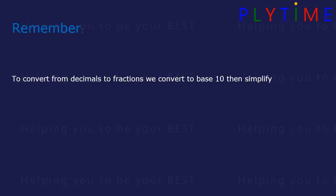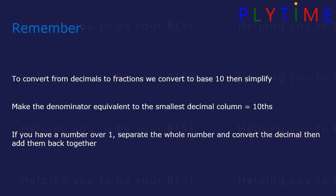Remember, to convert from decimals to fractions, we convert to base 10, then simplify. Make the denominator equivalent to the smallest decimal column, such as tenths. If you have a number over 1, separate the whole number and convert the decimal, then add them back together.